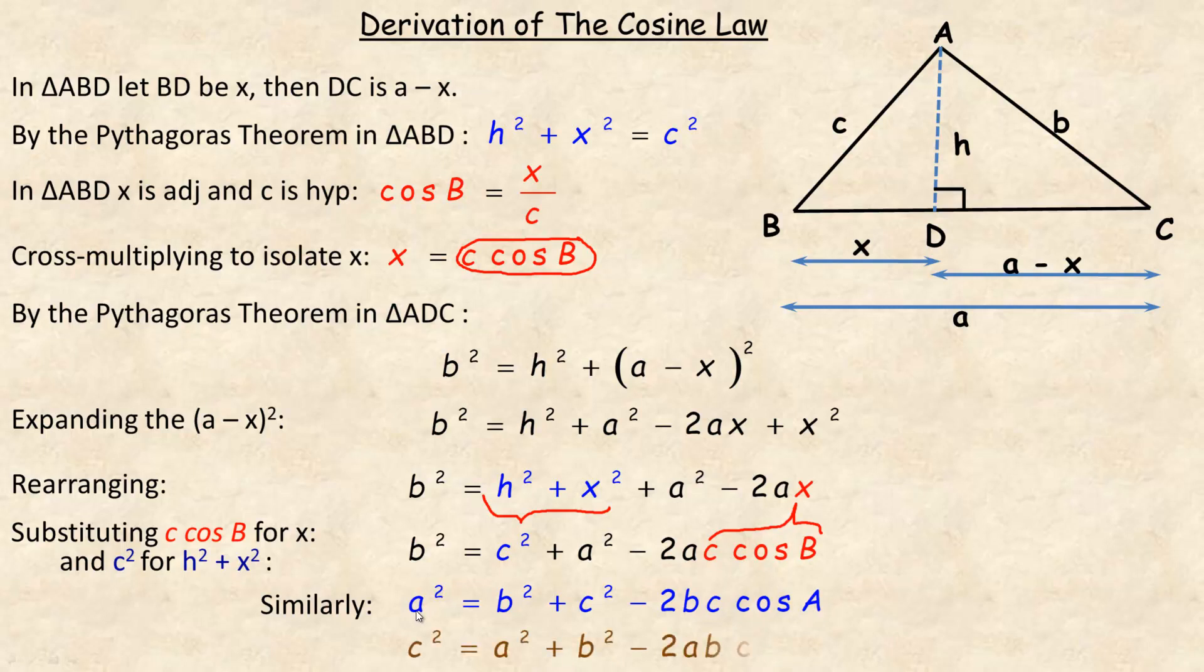This angle is the one across from the side we're finding. And of course, if we wanted to write it for the C side, C squared equals A squared plus B squared minus 2AB cos C. Again, this is the angle across from that side. These are the two sides that aren't this one. And these two sides are the same two that are squared here.